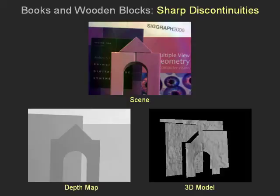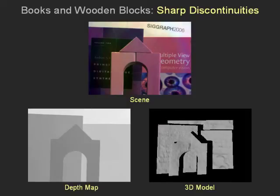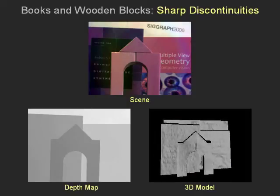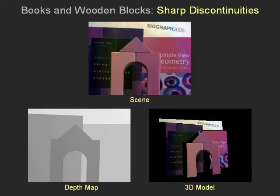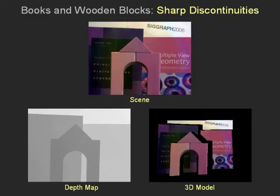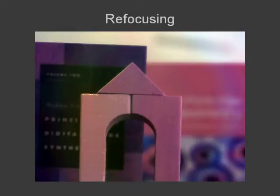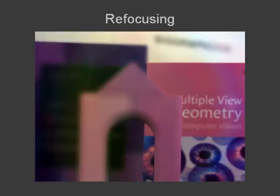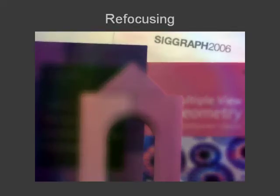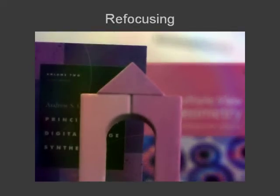Here we show novel views of the computed scene. The scene is now texture mapped. Using the computed scene geometry, we can synthesize images of the scene with different focus settings. Notice how different scene regions go in and out of focus based on their depth.